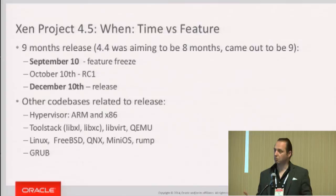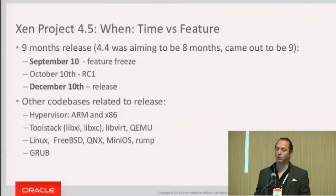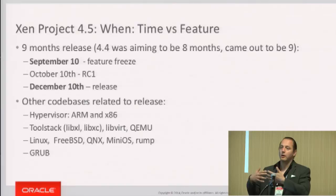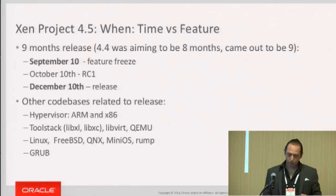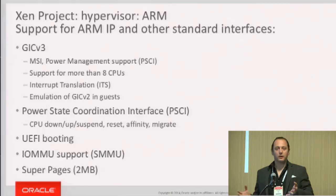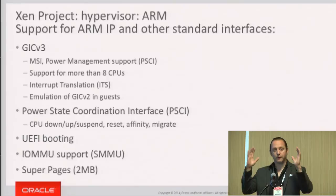As George and Lars alluded, there are a lot of related things in the Xen ecosystem: there's the hypervisor, the tool stack, the guests that take advantage of it, libraries like LibVirt, Grub2 as a bootloader, and more — a whole bunch of things that make this work. I'm going to go through all those pieces as fast as possible, starting with the hypervisor, then the tool stack, then the operating systems, then other pieces.